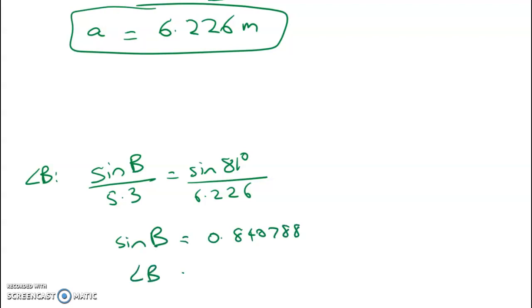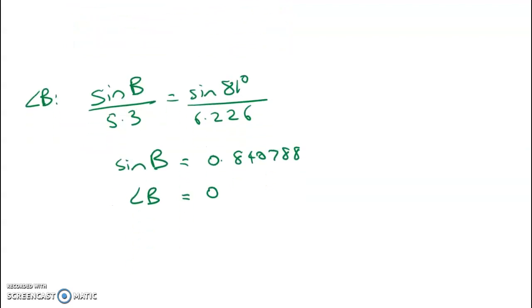So angle B - in radians I got 0.9987, which is 57.2 degrees. That means angle C equals 180 minus 81 minus 57.2, which is 41.8 degrees. Okay, so we've now got the angles and the lengths.